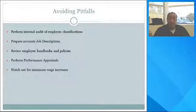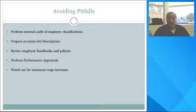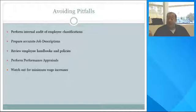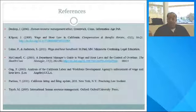To avoid pitfalls, employers should: perform internal audits of employee classifications; prepare accurate job descriptions to ensure duties are correctly presented and employees are well aware of them; review employee handbooks and policies to ensure compliance and make sure they are not outdated and reflect the correct wages to be paid; perform annual or quarterly performance reviews; and watch out for minimum wage increases. This concludes the presentation on California's wage and hour laws. Thank you and have a great day.